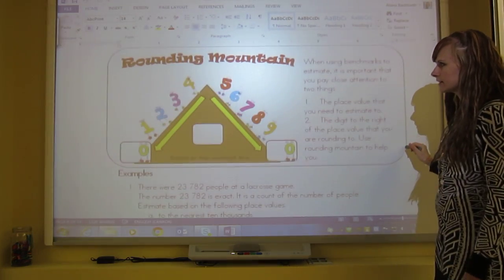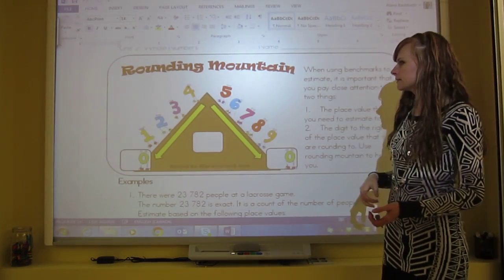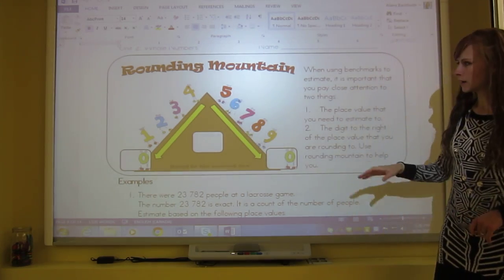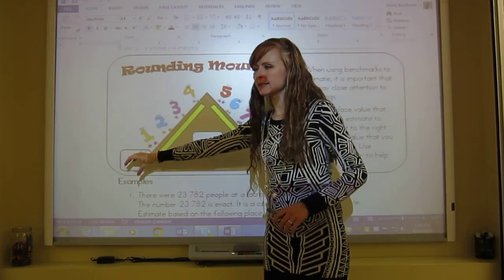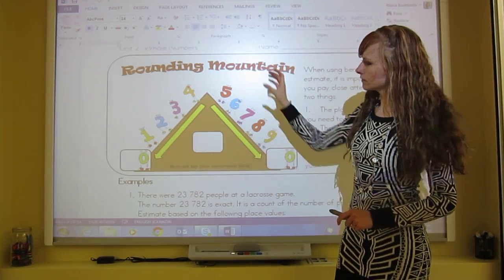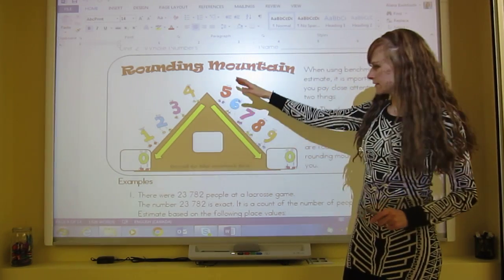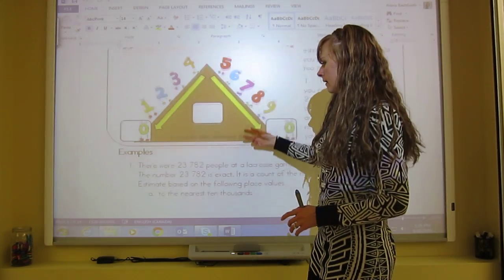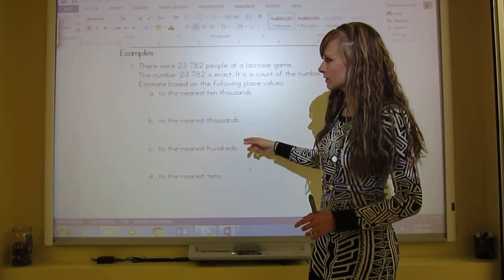This is just a simplified version of it. Rounding mountain is another way, just a visual way of looking at it. So 4 or less, then it goes down to the lower benchmark. If it's 5 or more, it goes up to the higher benchmark. We're not going to look at that too much more, because we've already looked at it quite a bit.